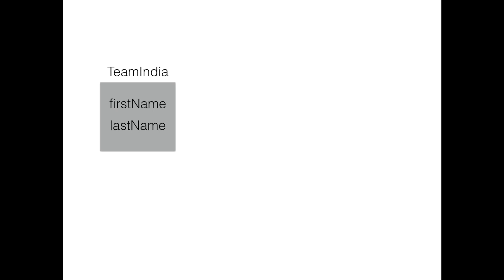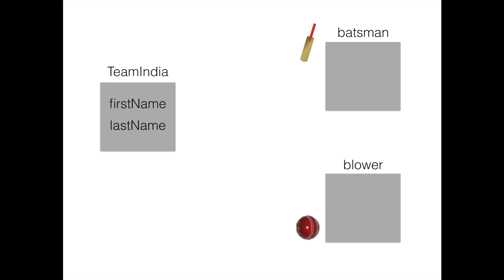Whenever I'm choosing players, I have to choose them by keeping two things in mind: either a player is a batsman or a bowler. So let's create two different classes called Batsman and Bowler. My Batsman class has two properties unique to a batsman: batting hand and high score. So all my batsmen will have a batting hand and a high score. Similarly, all my bowlers will have a bowling hand and a best figure. This batting hand and high score is pretty unique to the Batsman class.